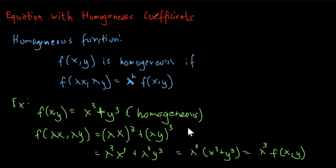That is how we test if a given function is homogeneous or not. The reason we do this is that this technique for solving first order differential equations applies only to equations with homogeneous coefficients — meaning the coefficient functions of our differential equation must be homogeneous. If not, we cannot apply this technique, so the very first thing to do is to test if the given differential equation has homogeneous functions as its coefficients.